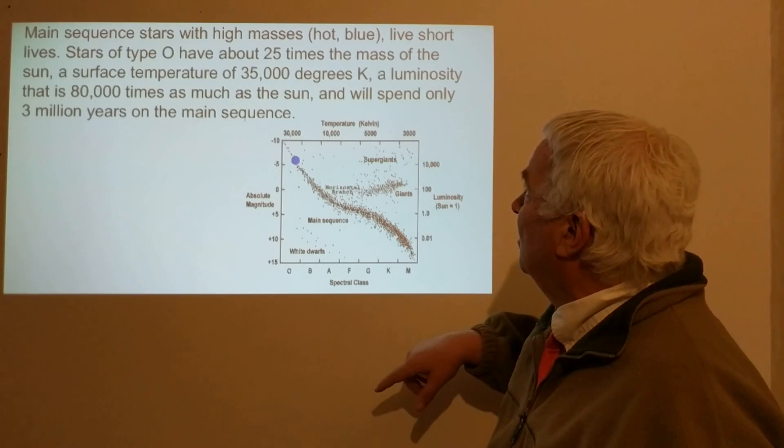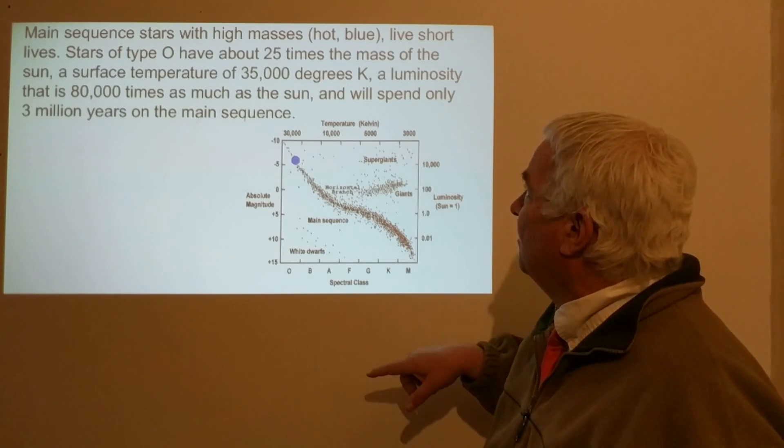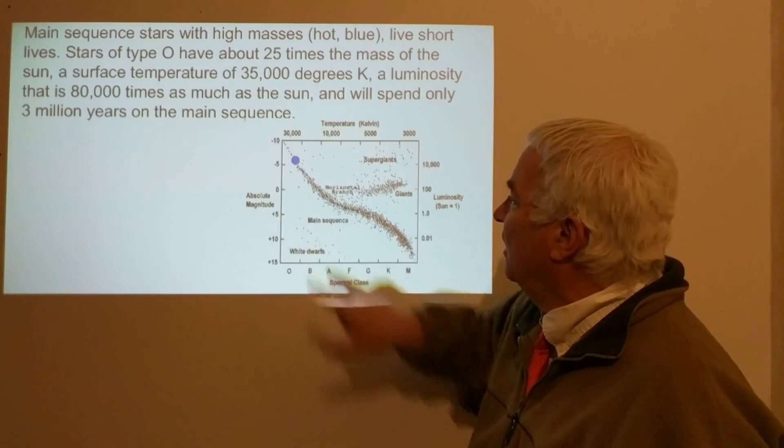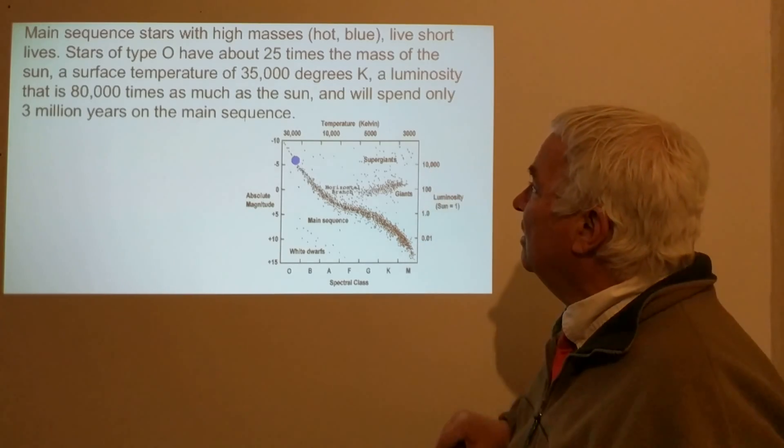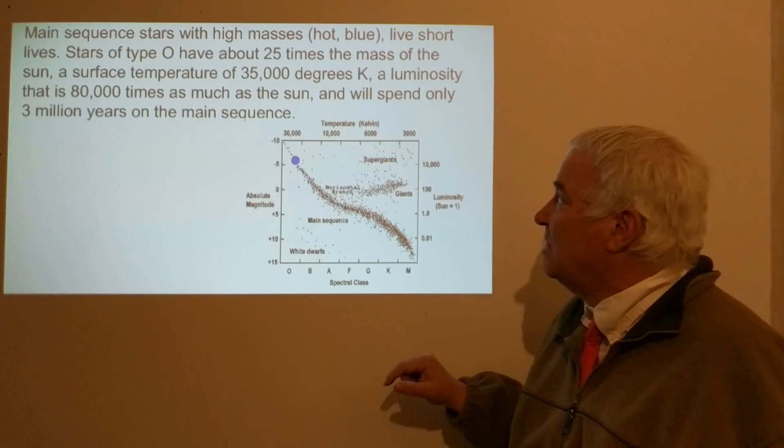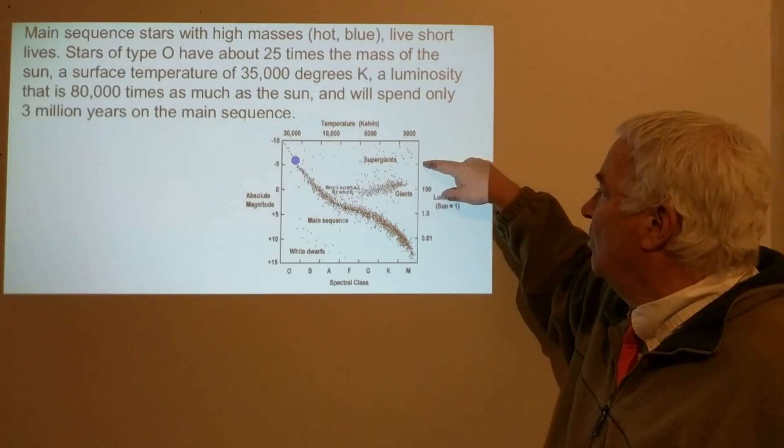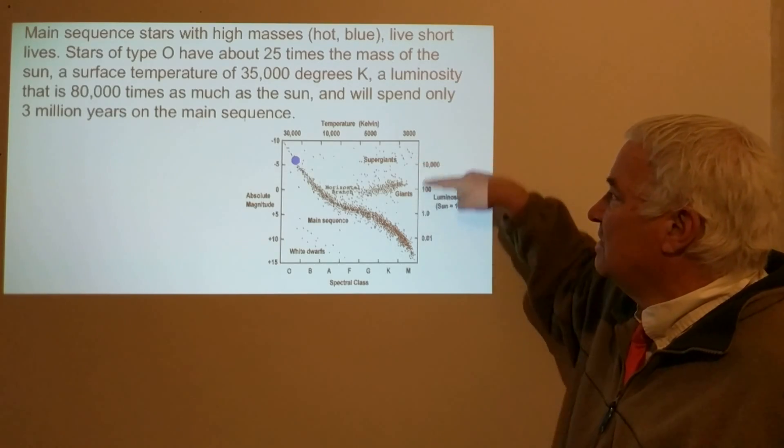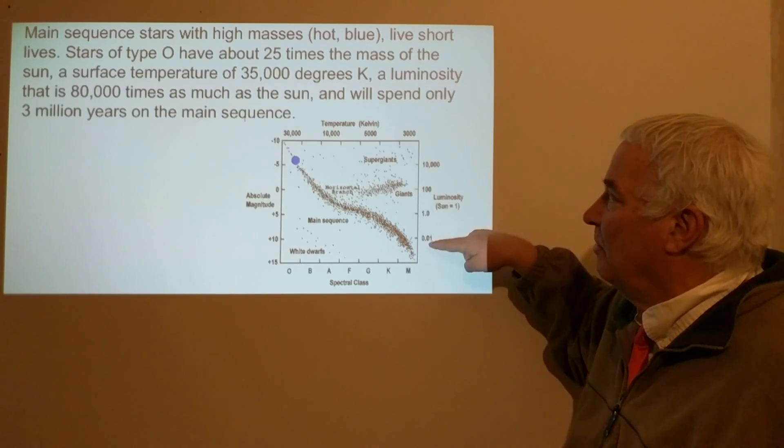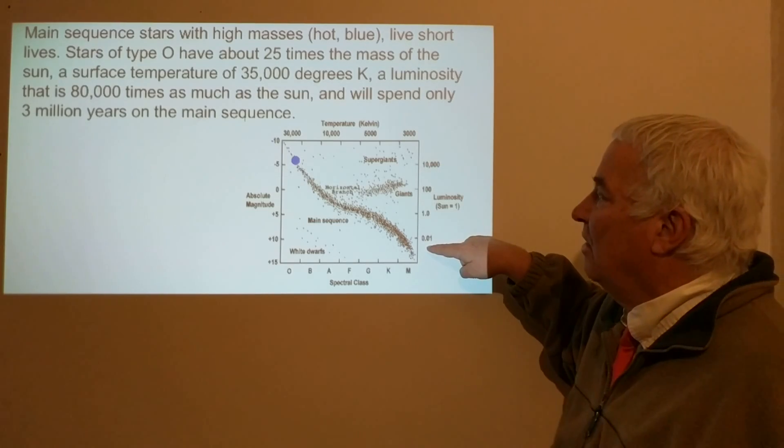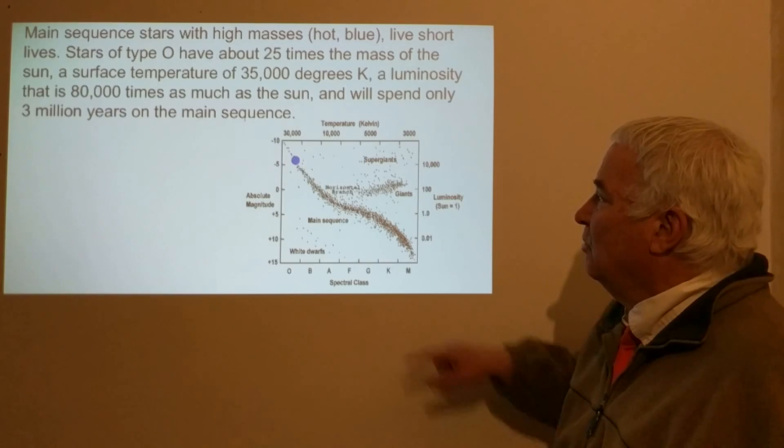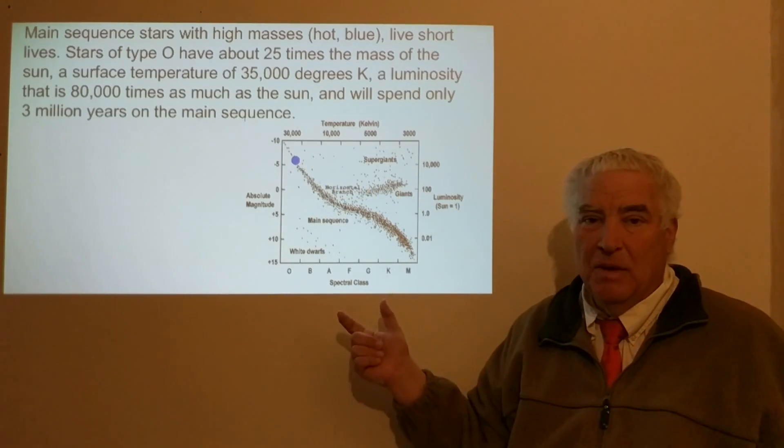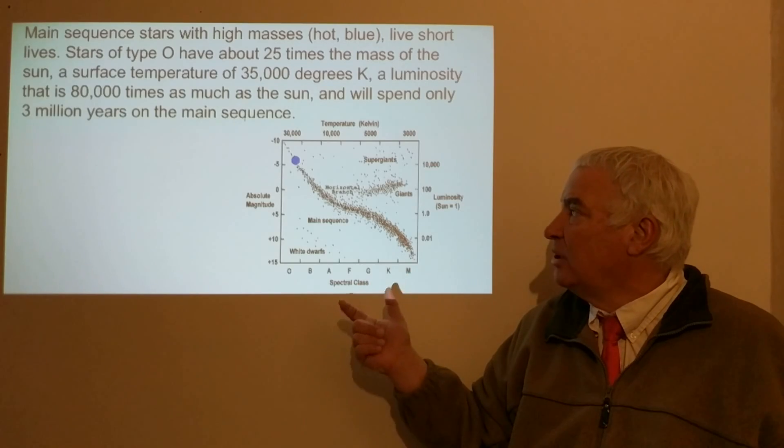And a mass of about 25 times the mass of the Sun is located up here on the HR diagram, so its luminosity is about 80,000 times as much as the Sun. So it would be up above the 10,000 mark here—notice this is a log diagram. And it would spend about 3 million years on the main sequence. So consider 3 million years is a very short time for a star.